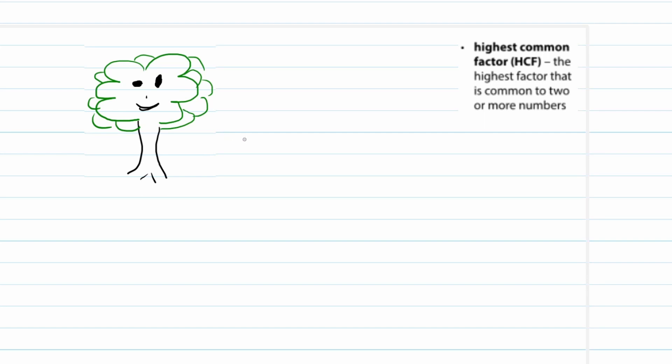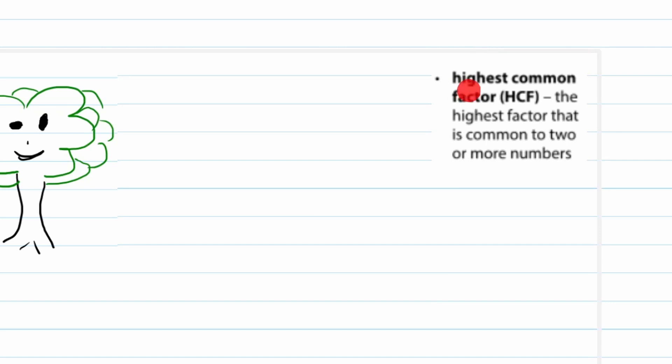So now that we know what a prime factor is and how to use a factor tree, I want to introduce it to a new concept and this is called the highest common factor. The highest common factor that is common to two or more numbers.